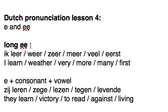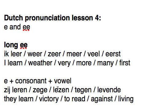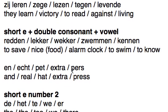A trick to know whether it's going to be a long E is when you see one single E plus a consonant plus a vowel. You can see here that it's the long E, and this often happens in the plural and with verbs. With verbs ending in EN, the E will have one extra consonant and then the EN.